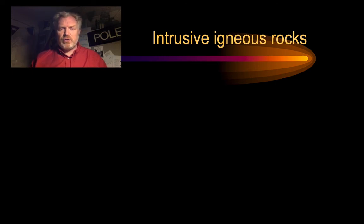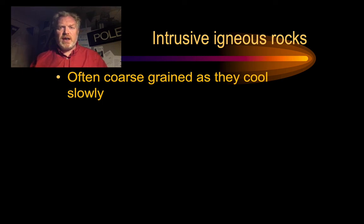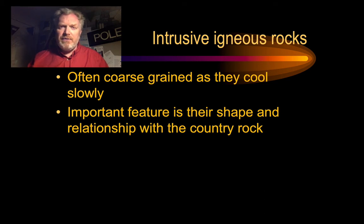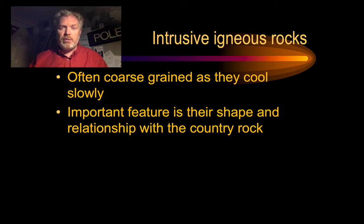For the intrusive igneous rocks, there are a few features they have in common. They're often very coarse-grained — they cool slowly, well insulated beneath the Earth's surface, perhaps in rocks that are already fairly warm, so the crystals have time to grow and are relatively coarse. The key feature we need to recognise is the shape they form in and their relationship with the country rock that surrounds them.